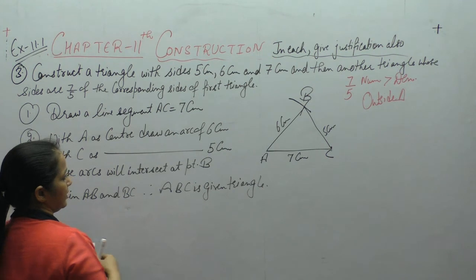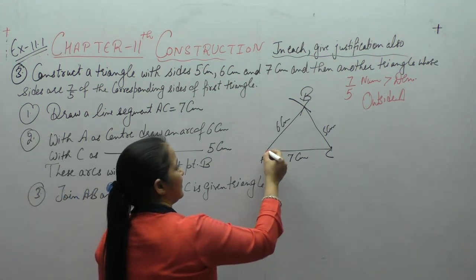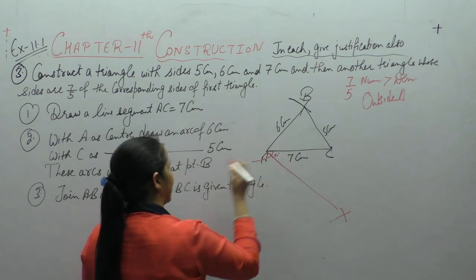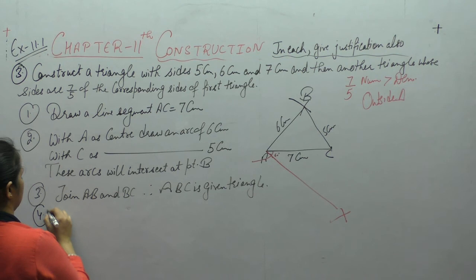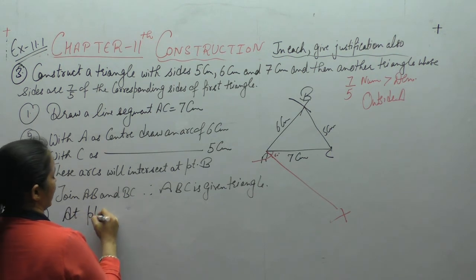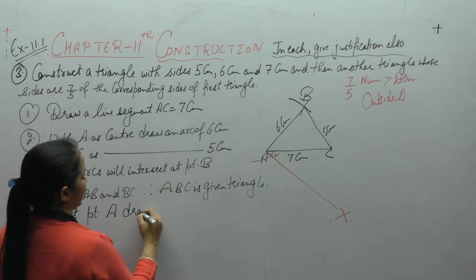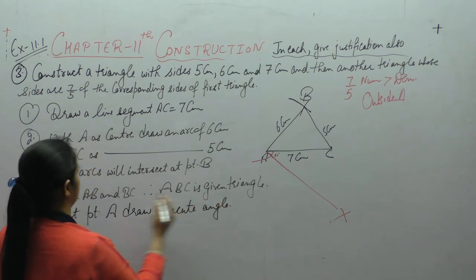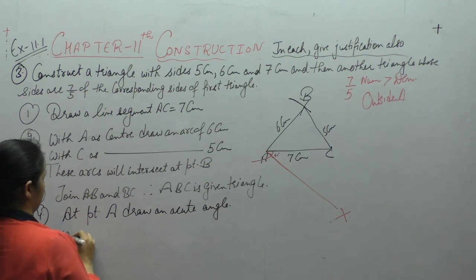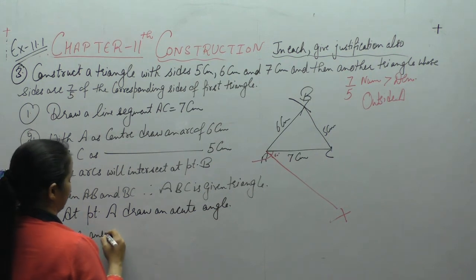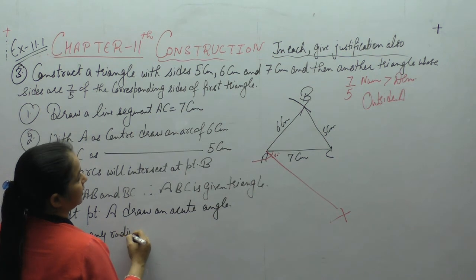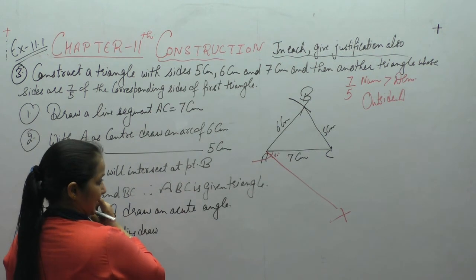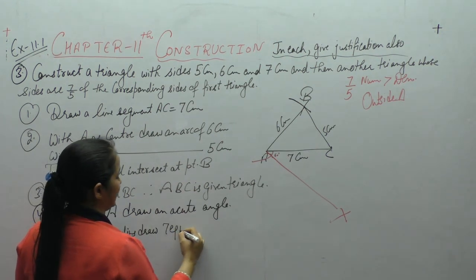Draw an acute angle at point A — 60 degree का हमने angle बना दिया। With any radius, maximum जो value है 7 है, draw 7 equal arcs from point A.